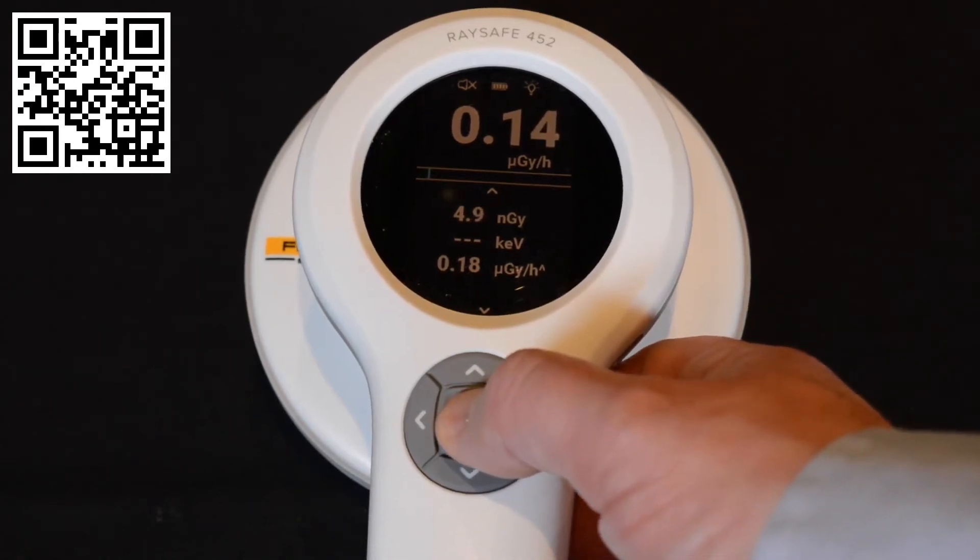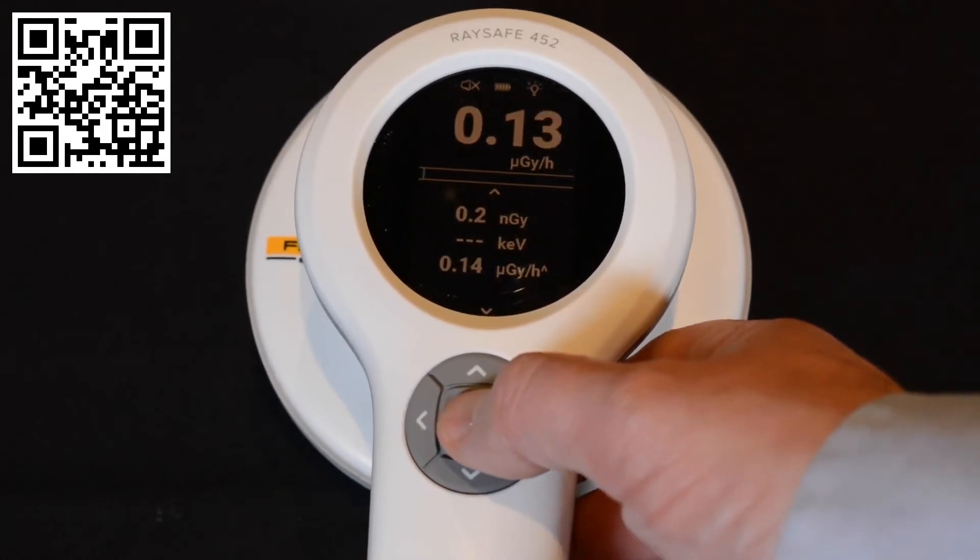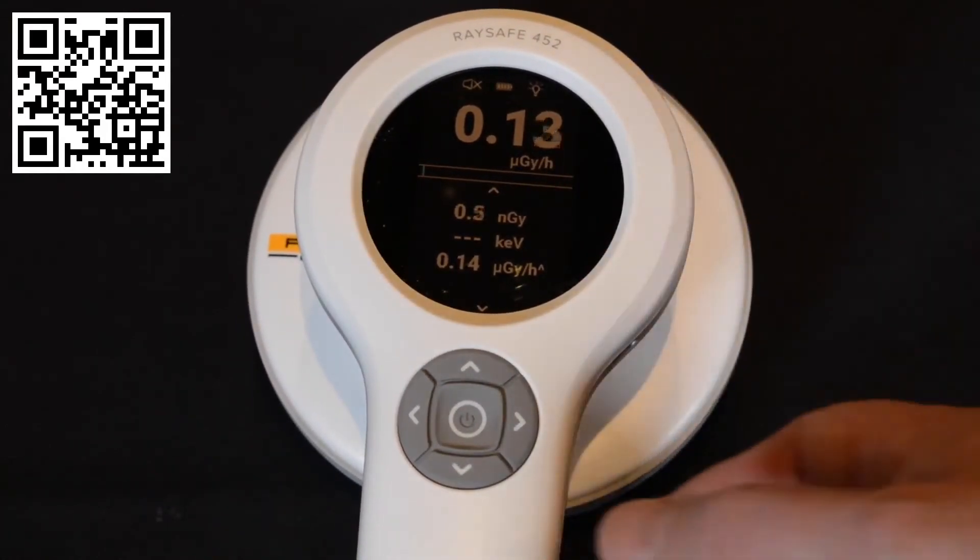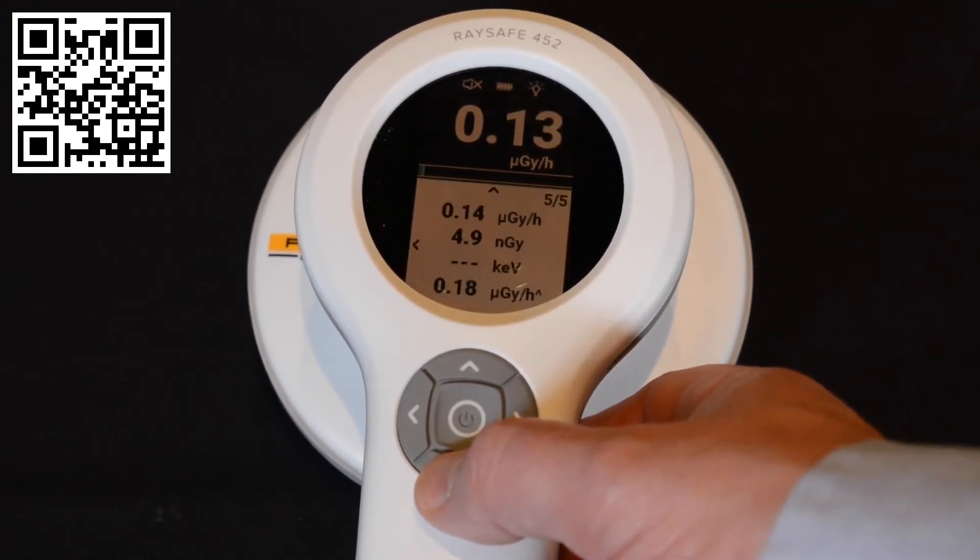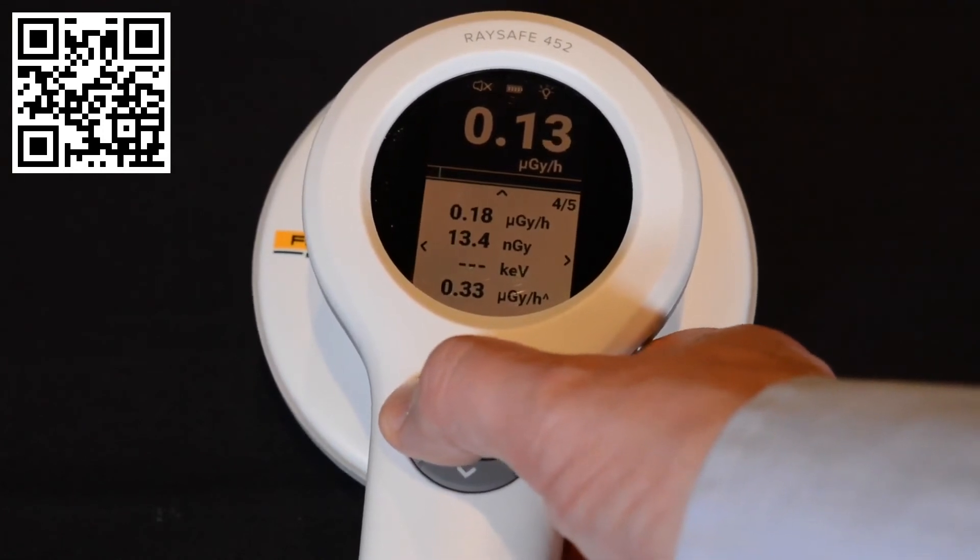You can store a measurement by quickly clicking on the center button. When you save it, it will reset the accumulation and the peak value. But the live value is always happening. You can scroll down to see what you stored, you can scroll through your saved measurements, and you can download it to a PC, export it to Excel, or handle it any way you like.